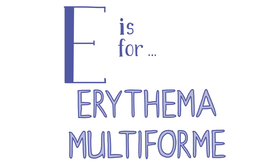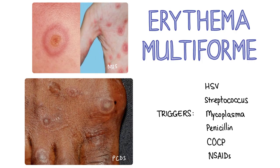E is for erythema multiforme. Erythema multiforme is an acute self-limiting hypersensitivity reaction most commonly triggered by infections like the herpes simplex virus, streptococcus, and mycoplasma, but it can also be triggered by drugs like penicillin, the COCP, and NSAIDs. Erythema multiforme can be completely idiopathic. It is characterised by target lesions initially seen on the back of the hands or feet before spreading to the torso, and may be associated with pruritus.